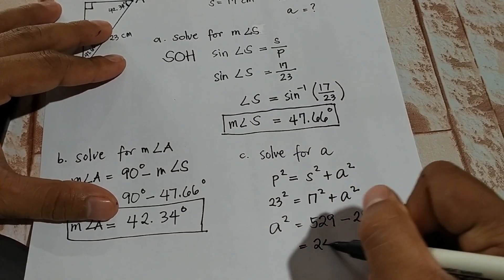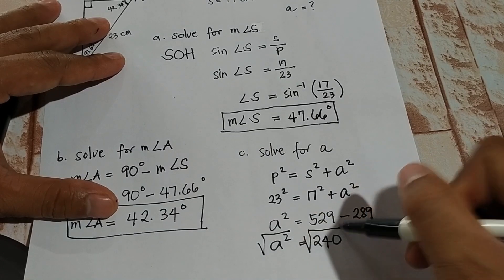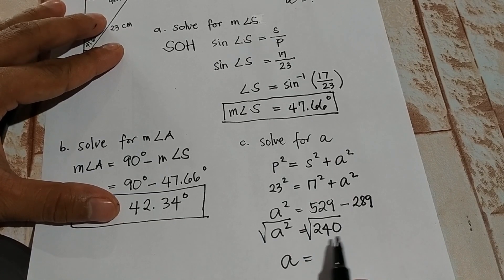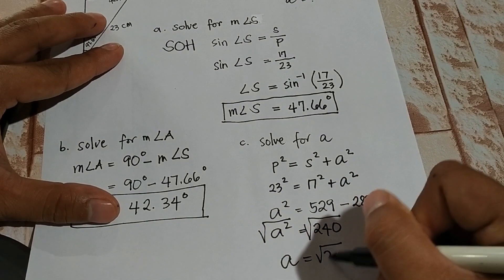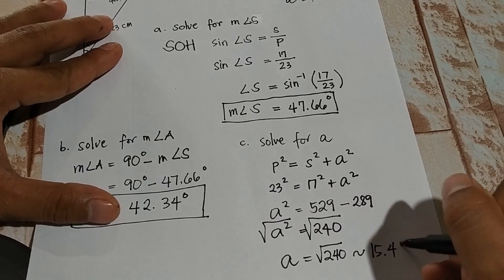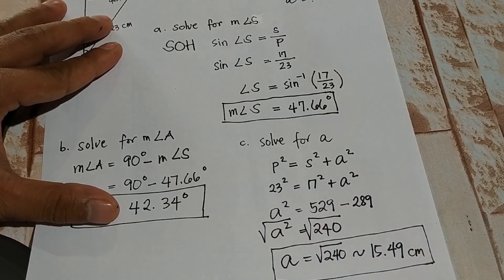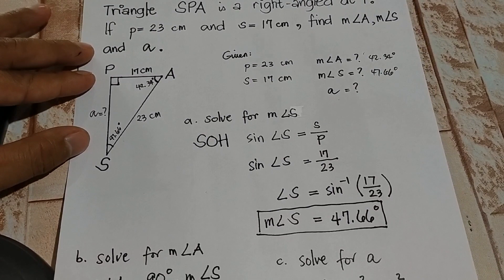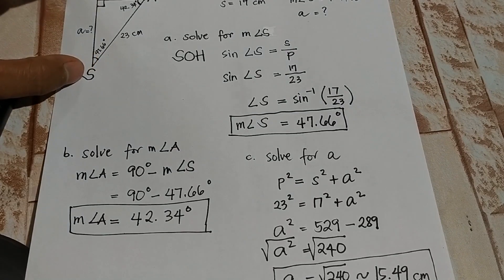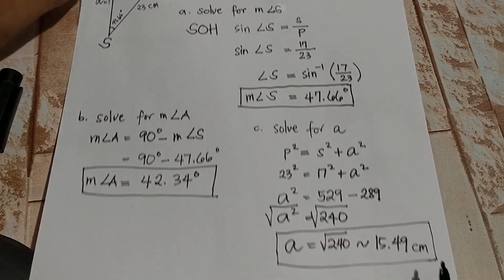So A squared equals 240. Taking the square root, A equals the square root of 240, which is approximately 15.49 cm. So the length of side A is 15.49 cm. From this illustration, we've solved that side A equals 15.49 cm. Any questions?